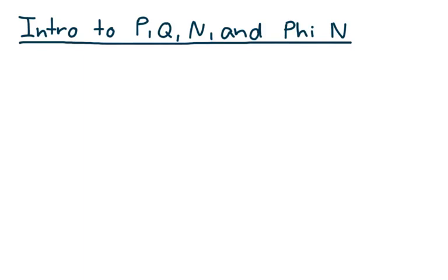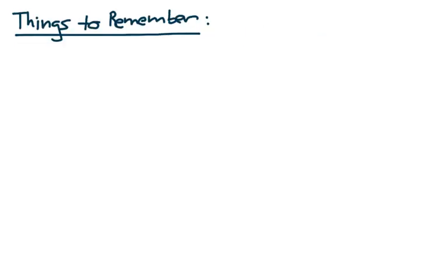This is part two of a series on the RSA encryption algorithm — an intro to P, Q, N, and Phi N. To understand the concepts I'm about to present, you do need to keep in mind some of the points I brought up in my last video, which I'm going to very briefly restate here.